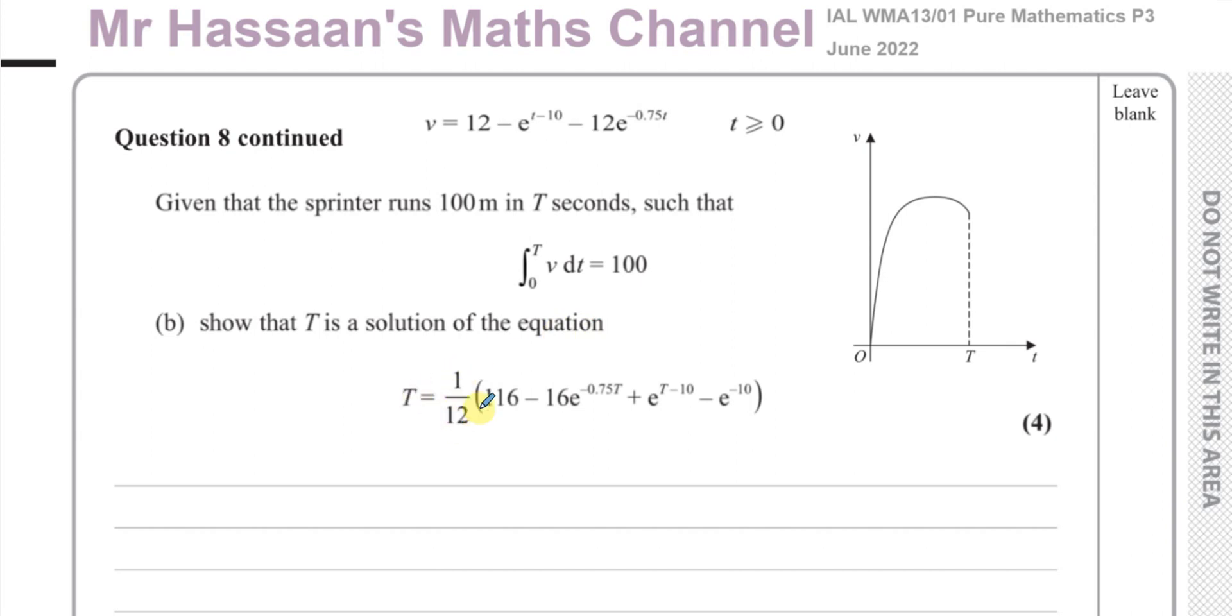T equals 1 over 12 times all of this expression here. So we're going to use integration because we know to find the area under the curve as they've told us here, we have to integrate the function v between these values of 0 and t. So if I integrate this original expression here: 12 minus e to the power of t minus 10.